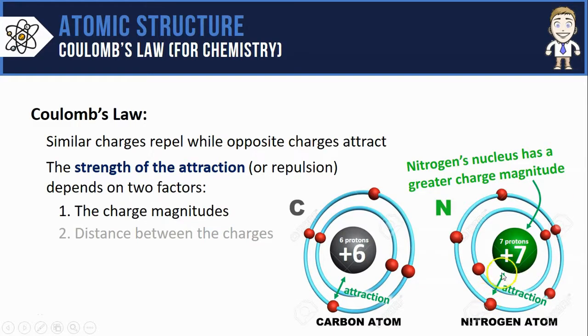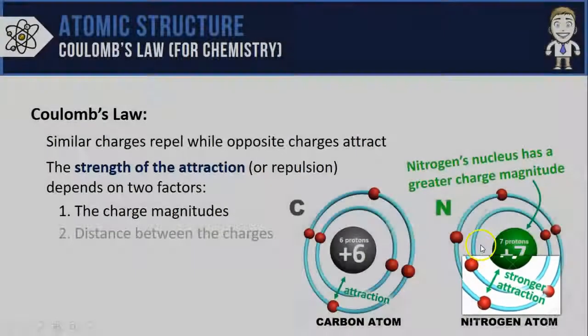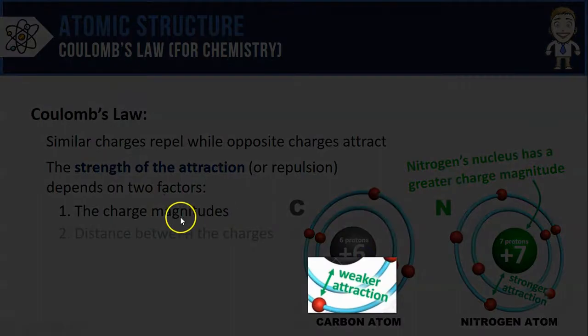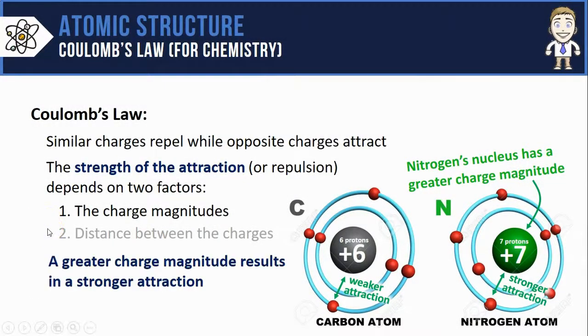Why does this matter? Well it means the attraction between the electrons and that nucleus will be stronger. For carbon with a lower charge magnitude the attraction will be weaker. This is a super important idea: let's summarize it by saying that a greater charge magnitude results in a stronger attraction.